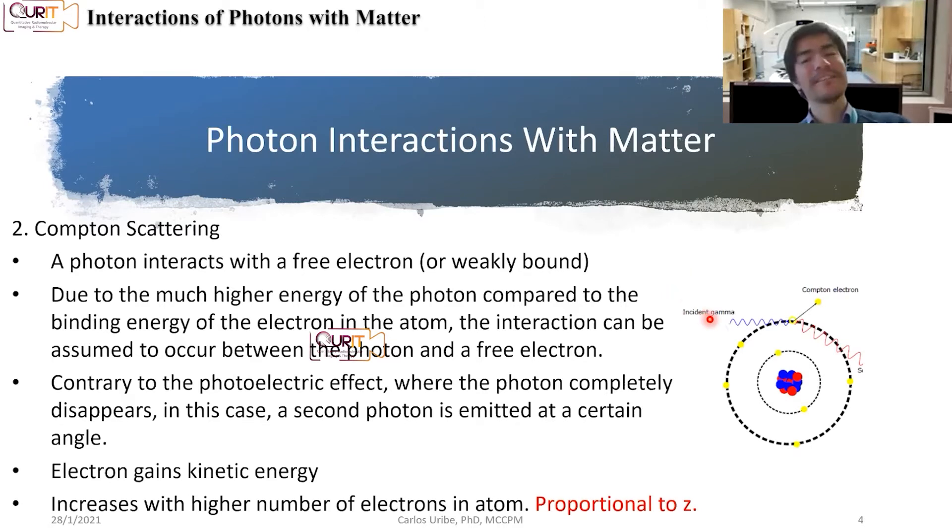Second effect is what is called Compton scattering. So you can think, you know, it's similar, you have an incident photon. But what happens now is that the interaction is going to occur with a very, very weakly bound electron. So one of the electrons from the very outer shells of the atom. And because in this case, the energy of the photon is much, much higher compared to the energy of that electron, then we just assume that the interaction occurs between a photon and a free electron.